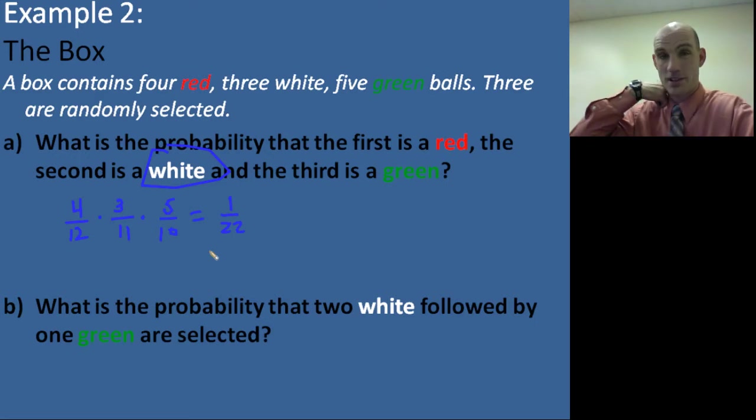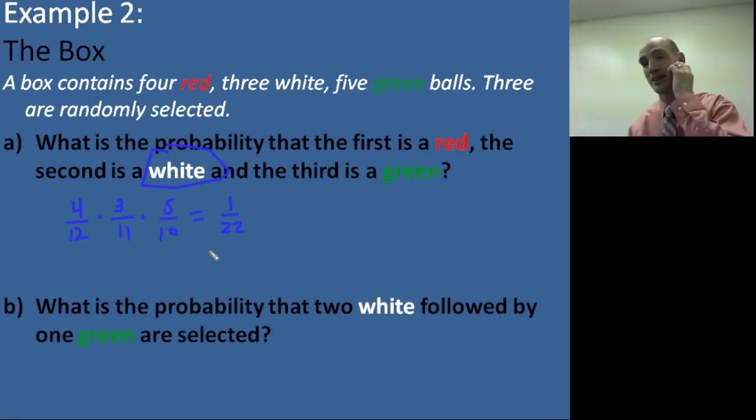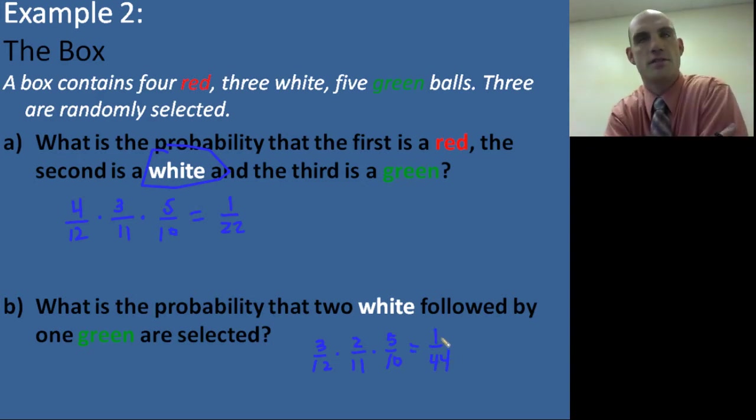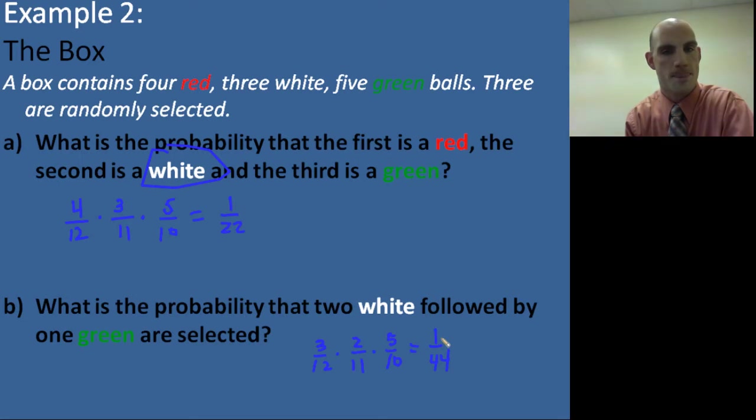Okay? So the probability goes down. 4 out of 12 is a 33% chance, but 1 out of 22 is more like a 5% chance. So we go from a 30% chance of getting just that one red to all of these things happening in succession gives us a very low probability. So what are the probabilities that two white followed by one green are selected? Well, let's look. The probability of the first event happening is 3 out of 12. The probability of the second event happening is 2 out of 11. Because if we pull one of the white ones out, we only have two left, and we have one less in the box. And the probability of the third one happening would be 5 out of 10 again. Because we pulled one out, there were 11. We pulled another one out, there's 10. And when we multiply this, we get 1 out of 44. So you see how these probabilities continue to become ever-changing. Because the probability of subsequent events happening is lessened and lessened. So though we pulled three in this first example, and we pulled three in the second example, they are not the same. And so it's important that you calculate each separately.